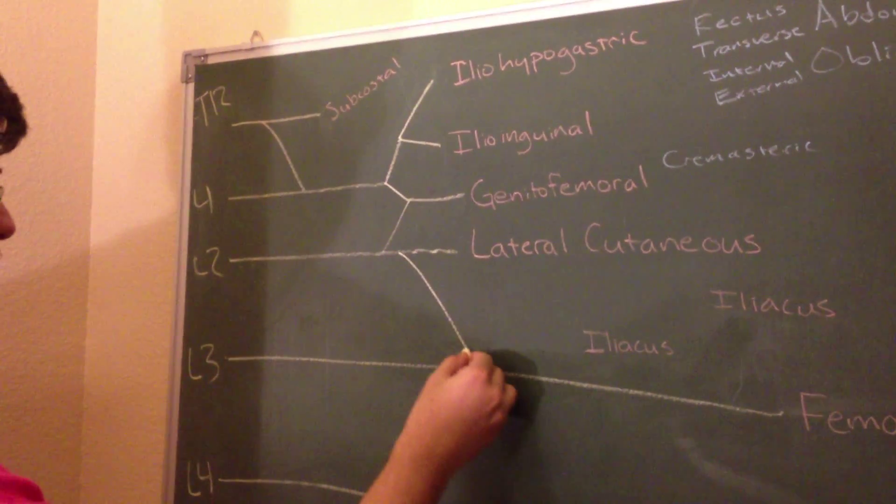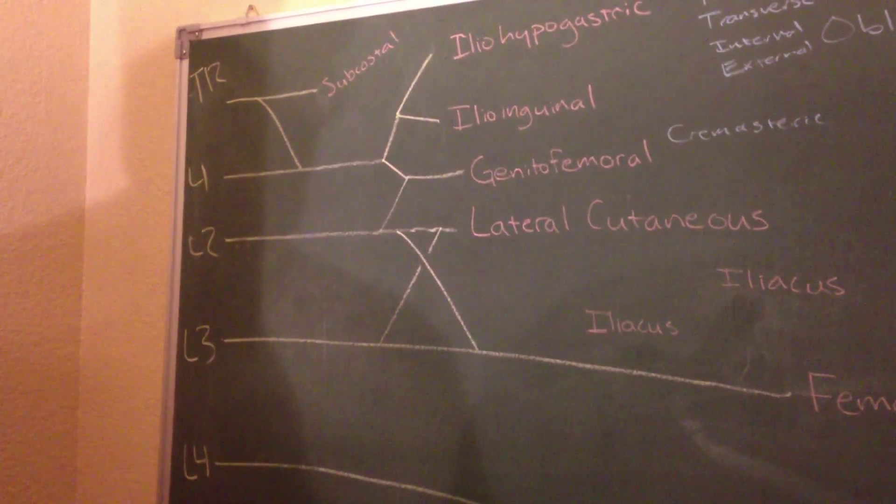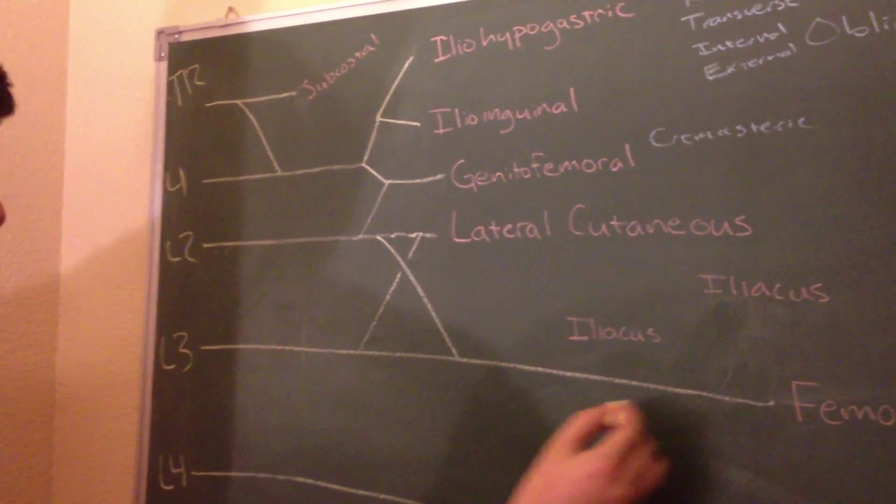Anterior branch is here, posterior branch goes like this. And next thing is down the femoral, L3.